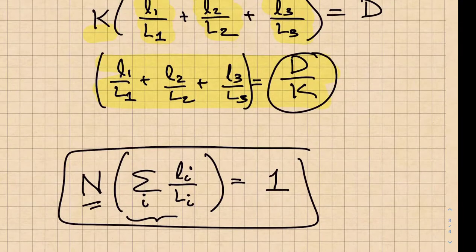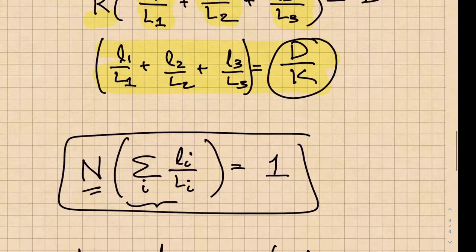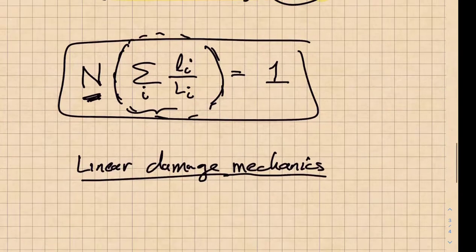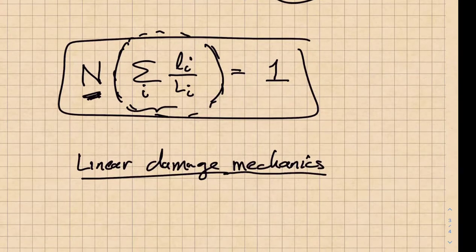Now, if we want to run that repeatedly, we have used up all of our life when that fraction goes to one. So we can multiply this periodic loading by N, and it tells us the number of times we can do it. This is called linear damage mechanics.